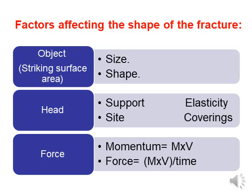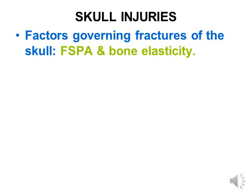Force, or momentum, or kinetic energy, depends mainly on M (mass) and V (velocity). The heaviness of the instrument — when mass is large, it causes a more severe fracture. To summarize the factors governing skull fractures: force/momentum related to mass and velocity, striking surface area, whether the head is supported, the application site, the site of the blow, and the elasticity of bone.